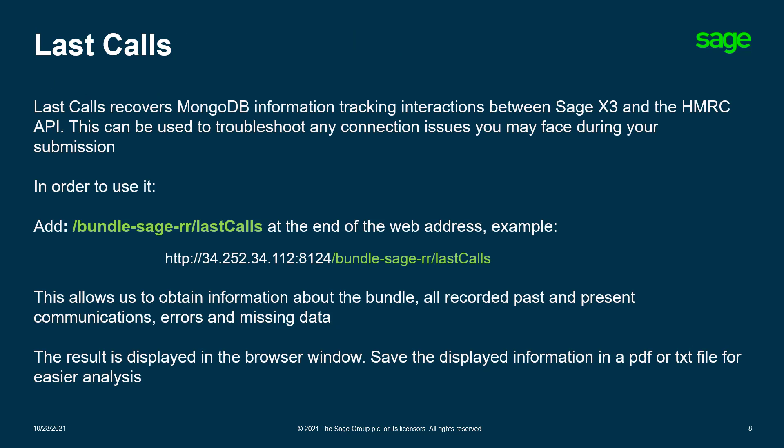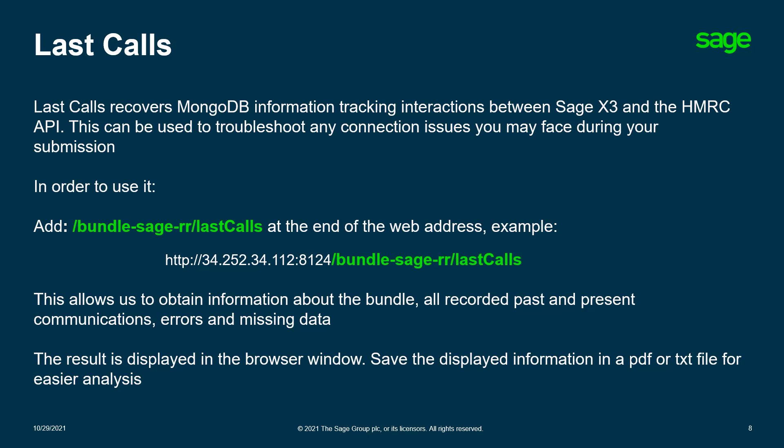The other main troubleshooting tool we use here at Sage X3 is the Last Calls. The Last Calls recovers MongoDB information tracking interactions between Sage X3 and the HMRC API. This can be used to determine connection issues you may face during your VAT submission. In order to use it, we will need to add the Last Calls command, as highlighted in green, to the end of your URL. In our example, we would add this after the port number located at the end of the IP address. This will allow us to collect information about the bundle, or recorded past and present communications, errors, and missing data. The result is displayed in the browser window. Save the displayed information in a PDF or text file for easier analysis.